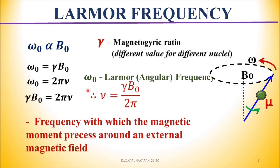In terms of linear frequency, omega0 equals 2 pi nu. Omega0 is the angular frequency, and nu is the linear frequency. There is a relation between the angular frequency and the linear frequency. Therefore, on equating these two, gamma B0 equals 2 pi nu, so nu equals gamma B0 by 2 pi.